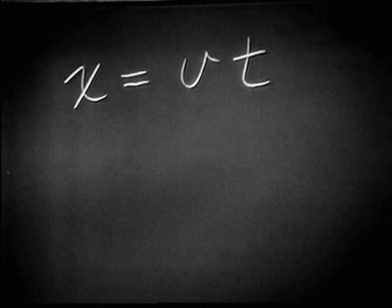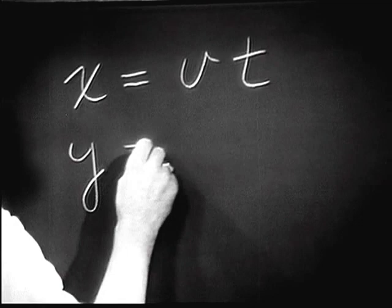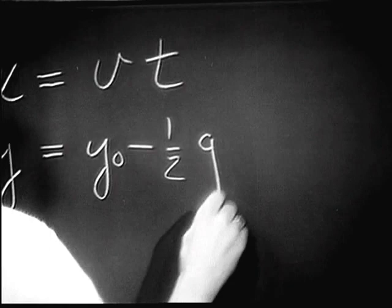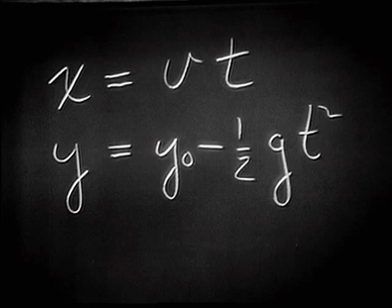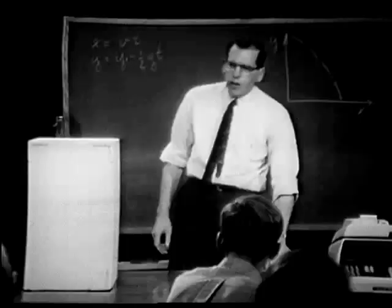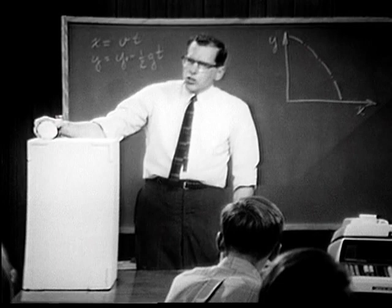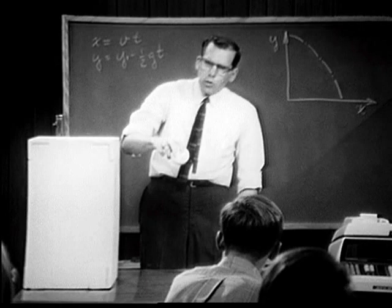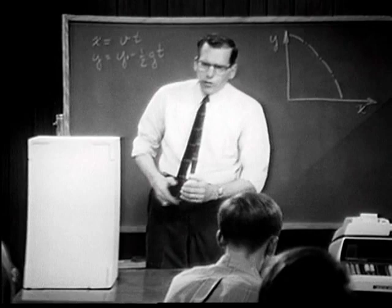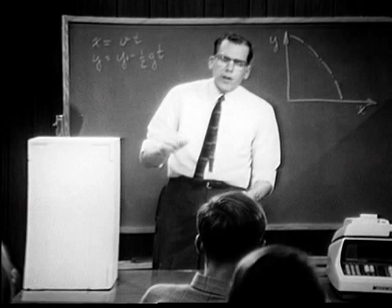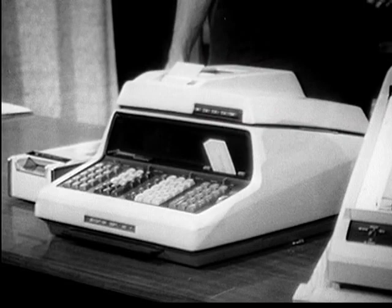If we have zero initial vertical velocity, the vertical distance y equals the initial displacement y-zero minus one half the gravitational constant times time squared. What we'd like to do this morning is to put these two ideas together and study what happens to a body when it rolls off a table and starts falling. When it's on the table, it has a pure horizontal velocity. When it goes over the edge, it has both a horizontal velocity and a vertical velocity. When I roll a ball like this, it all happens pretty fast and it's difficult to see moment by moment exactly what's happening. So what we'd like to do is slow that action down by using the computer to draw a graph of the path that the ball would take as it comes over the table edge.